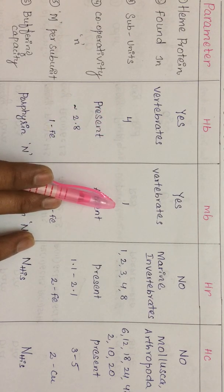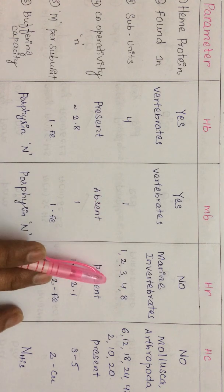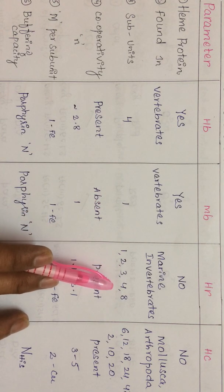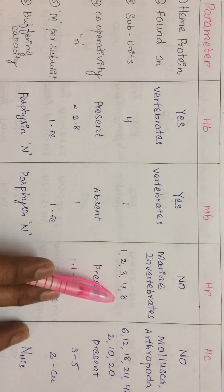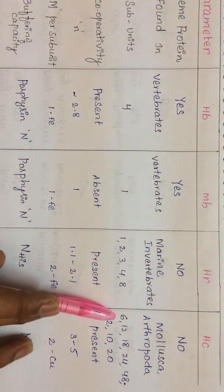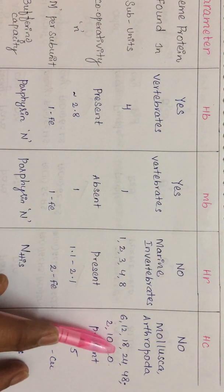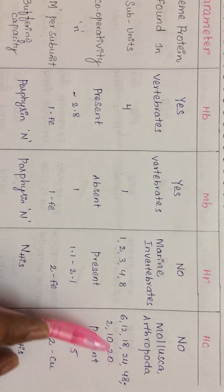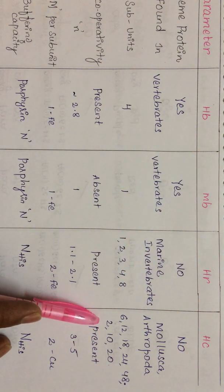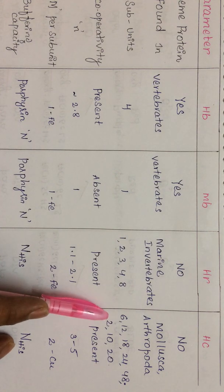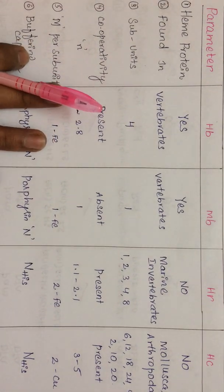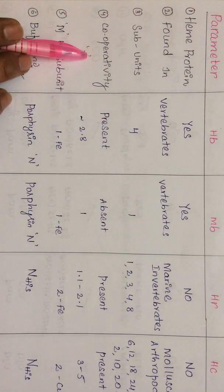Regarding number of subunits: hemoglobin has four subunits, myoglobin has only a single subunit. Hemerythrin has many subunits ranging from monomer, dimer, trimer, tetramer, and octamer. In hemocyanin, the number of subunits ranges in multiples of six — six, twelve, eighteen, twenty-four, forty-eight — and later investigations have also shown subunit numbers not in multiples of six, such as two, ten, twenty, and so on.